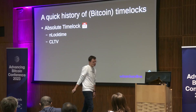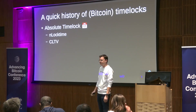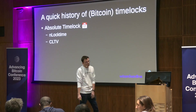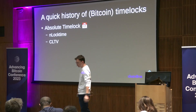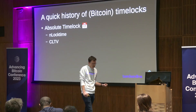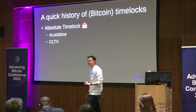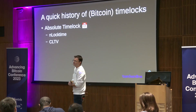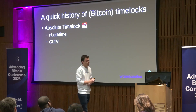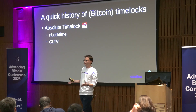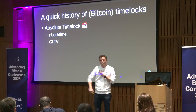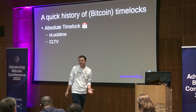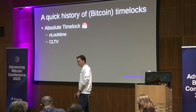A quick history — many of you probably already know this, it's just a refresher. The very first timelock on Bitcoin was using the nLockTime field. This is an absolute timelock. At the very beginning of Bitcoin, you could already set a field in your Bitcoin transaction called nLockTime, and the number you put in this field would be the minimum block height that the blockchain should be at for your transaction to be relayed. This was a relay policy, not a consensus rule — meaning a miner could still put it through. That was changed pretty quickly to add it as a consensus rule, so blocks wouldn't be valid if they include a transaction with an nLockTime higher than the current block height.